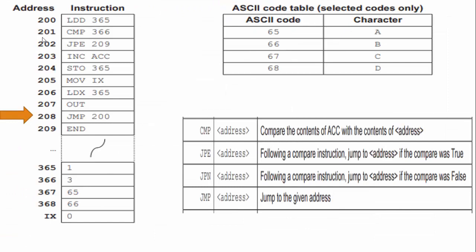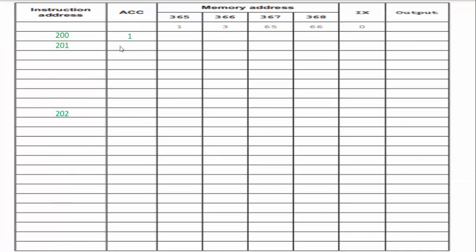The next one is line 202, which is JPE. Following a compare instruction, jump to the address if the compare was true. Well, one was not equivalent to three. Did this line of code run? Yes, it did. So I put that on my trace table, line 202. I am not jumping to 209 because it was not equal.